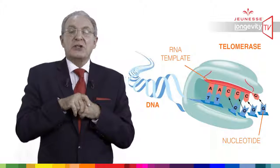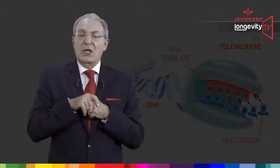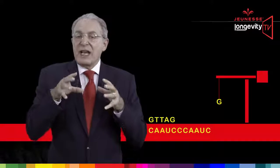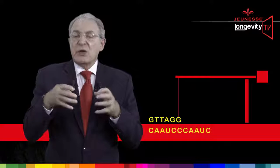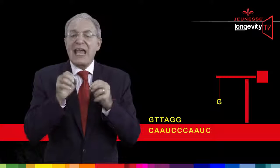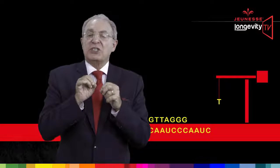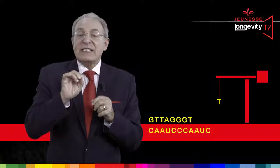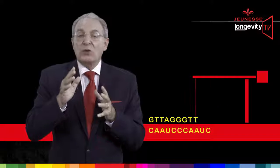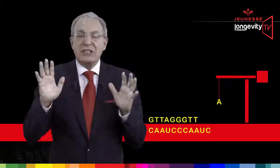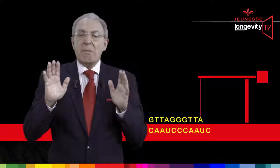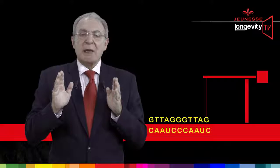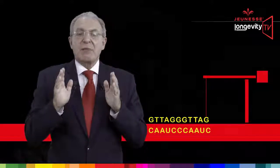Elizabeth found out why: germline cells have a special enzyme called telomerase, which is genetically controlled and permanently activated. When telomerase is activated, it rebuilds every piece of telomere that is lost — almost like magic — piece by piece, brick by brick.